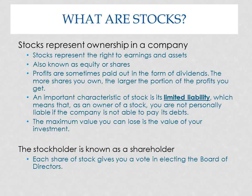Stocks represent ownership in a company, and that basically gives you the right to earnings. You get earnings through dividends, which we'll talk about in a lot more detail in a few minutes, and assets if the company fails. The reality is, if a company is failing, there's not going to be much left to divvy up, so really the earnings is the major part of that. You'll also hear the words equity or shares used to refer to stock, and dividends are from the profits.